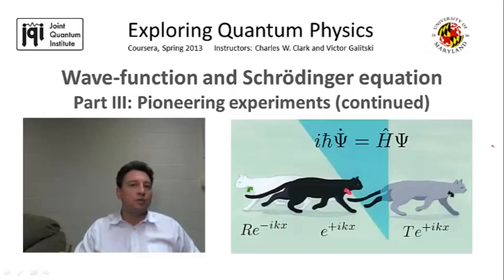However, this latter picture was also questioned by a number of theorists back in the beginning of the last century, and notably by Prince Louis de Broglie, who suggested that massive particles can sometimes behave as waves.